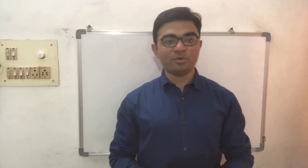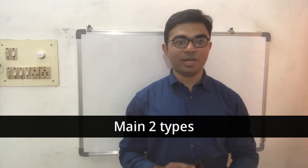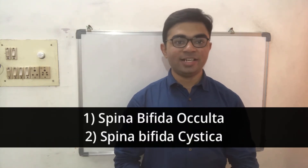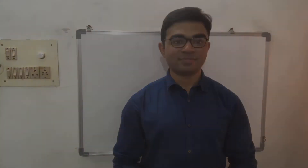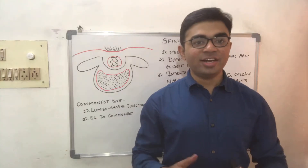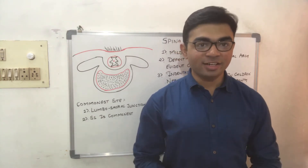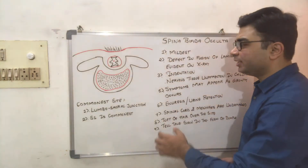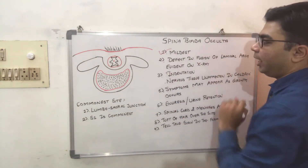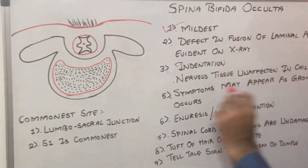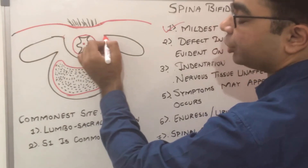There are two main types of spina bifida: the first is spina bifida occulta and the second is spina bifida cystica. Spina bifida occulta is the mildest form, characterized by a defect in the fusion of the laminal arch.